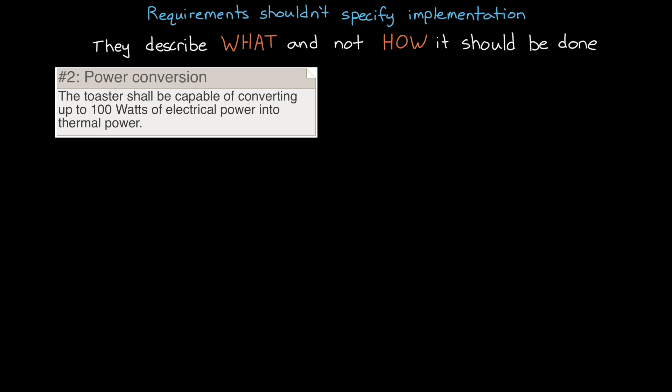The last sort of requirement pitfall that I want to discuss here is that of specifying implementation. Requirements, like functions from the last video, typically describe what the system should do and what it's constrained by, and not describe how it should be done. For example, we have the requirement that says that the toaster shall be capable of converting up to 100 watts of electrical power into thermal power. This defines a particular aspect of the design: what it has to do. It has to convert up to 100 watts. But how does it do that? Well, the requirement doesn't say. It could be with coils or some other heating element. The domain experts within the engineering team should have the flexibility to meet that requirement with an implementation of their choice.